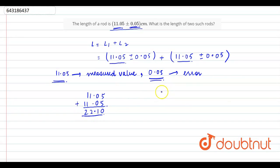So, we will calculate the error here. 0.05 plus 0.05. We will get 0.10. So, the answer is 22.10 plus minus 0.10 centimeter. So, option D is correct.